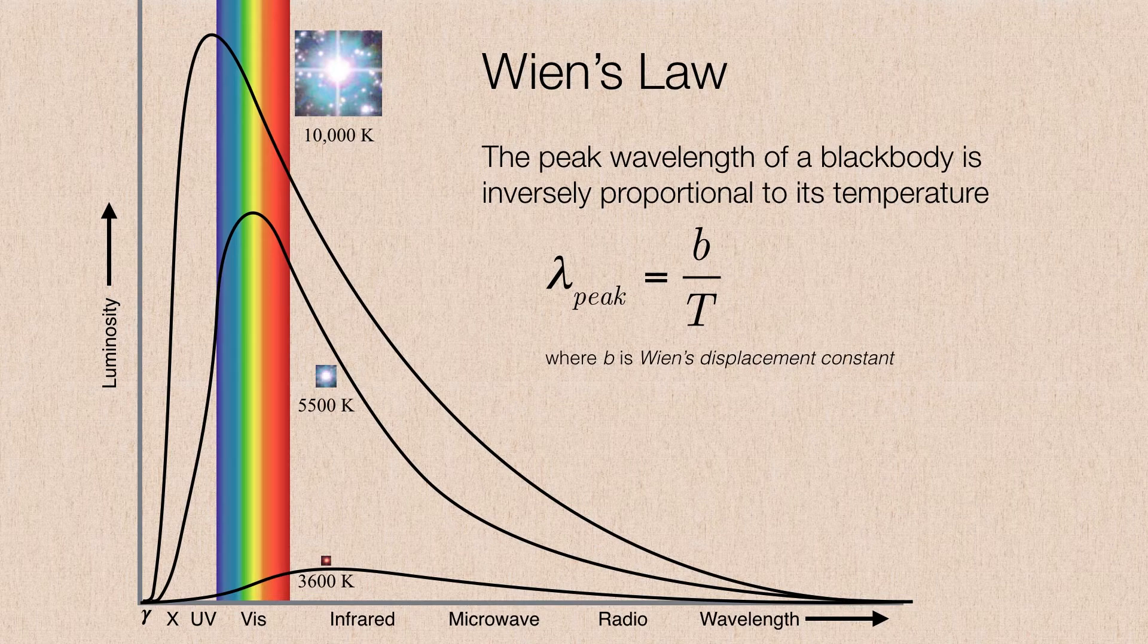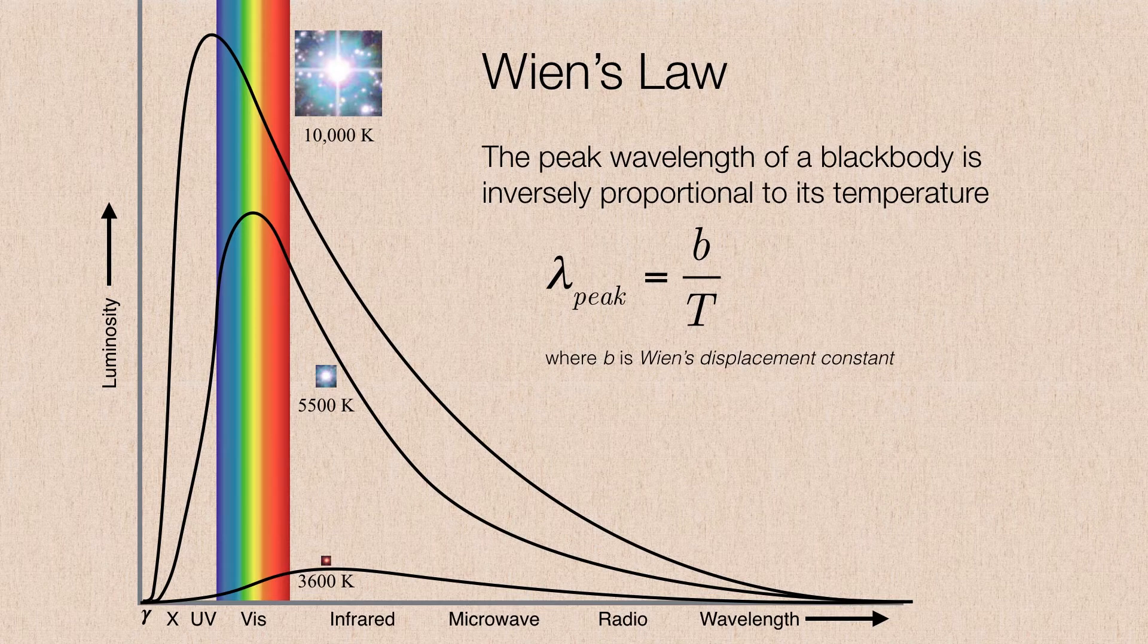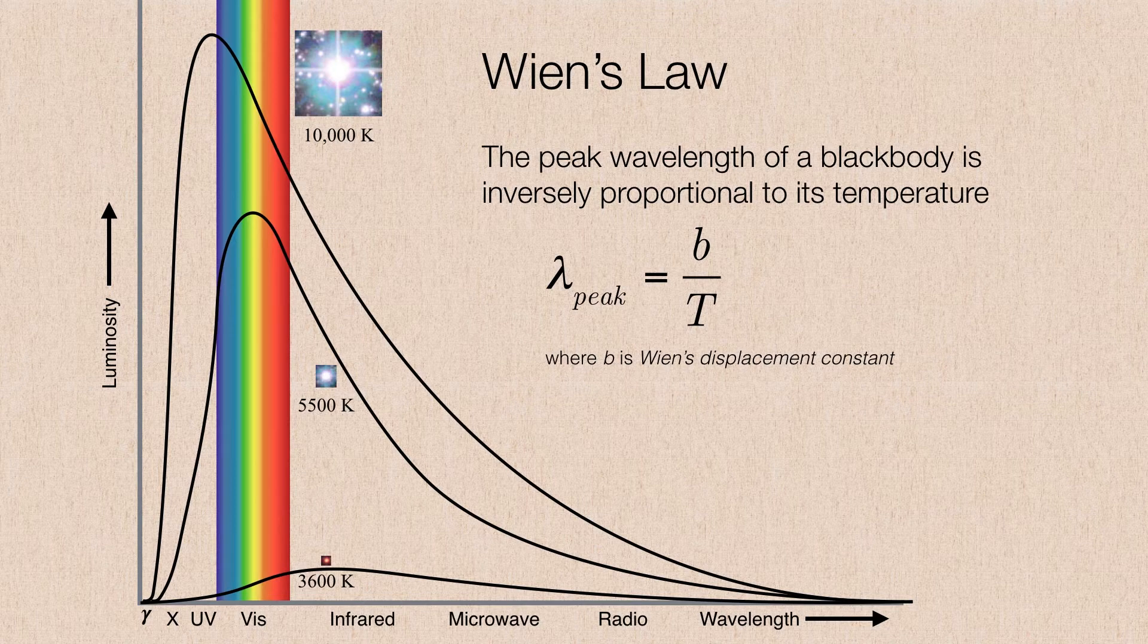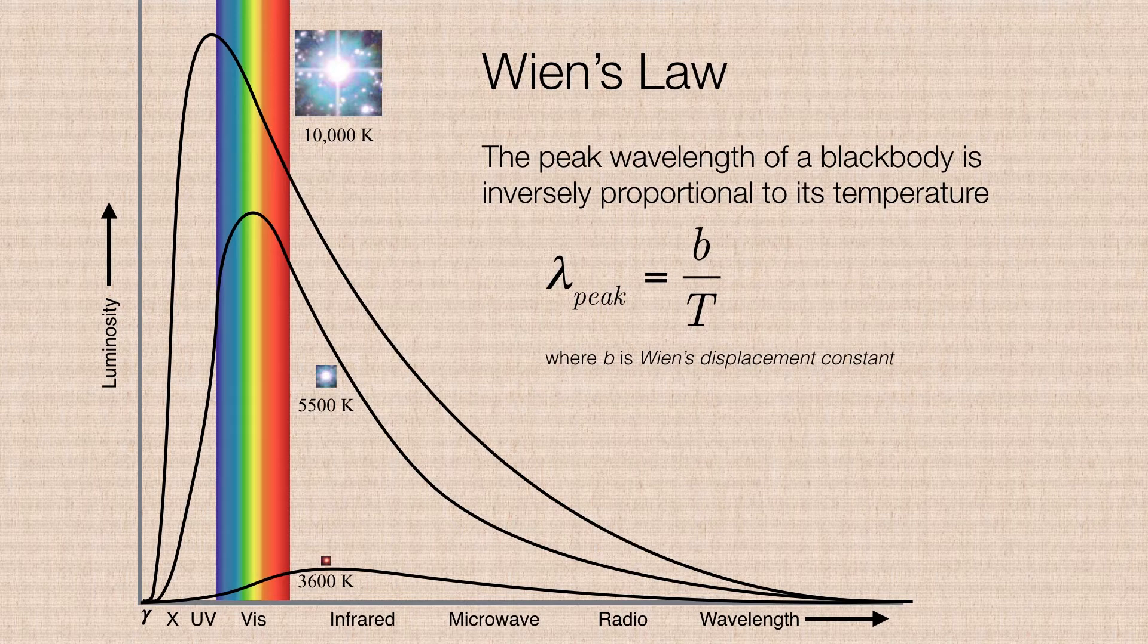But the color is defined by the peak wavelength at which the star shines. So recall that all stars will radiate at basically all wavelengths, but they'll radiate at some wavelength more than others. That peak wavelength is governed by the star's temperature.